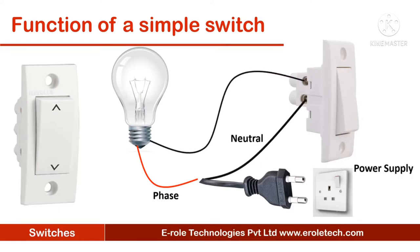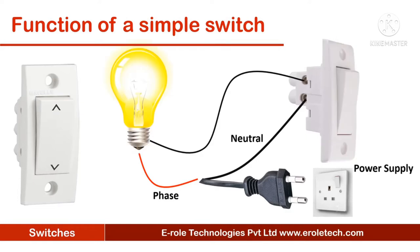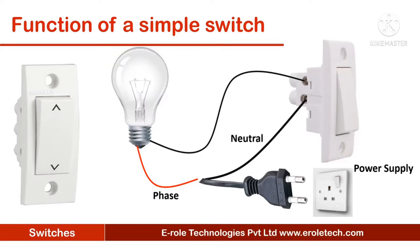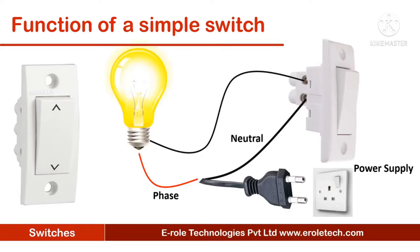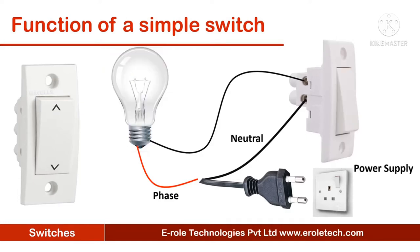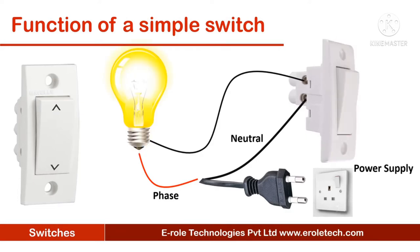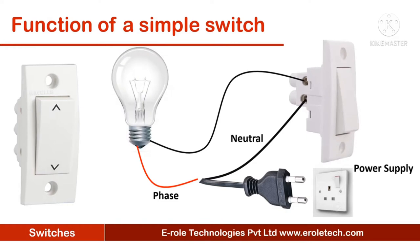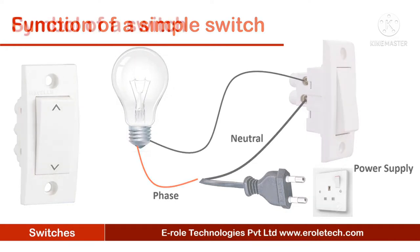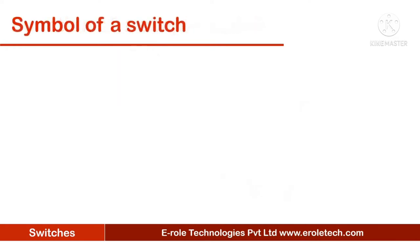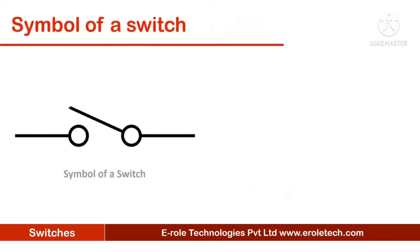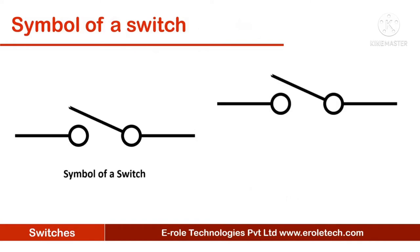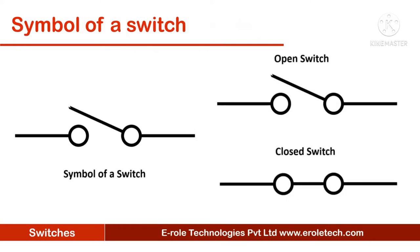When the switch is pushed downward, the appliance turns on, and the device stops as soon as the switch is pushed upward. This is the symbol of an on/off switch. This symbol shows the open switch position and this symbol shows the closed switch position.